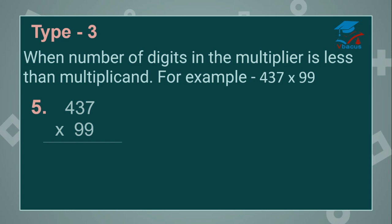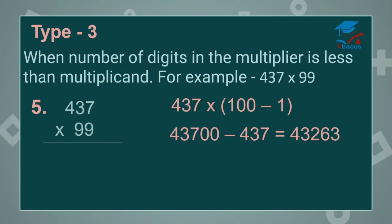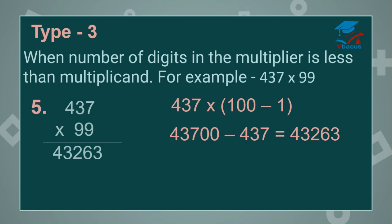99 is near base 100. So you can write 99 as 100 minus 1, and multiply 437 by 100 first, then subtract 437, because 437 ones are 437. So when you subtract, the answer will become 43,263. This is your final answer: 43,263.